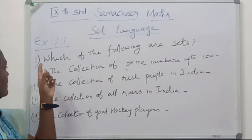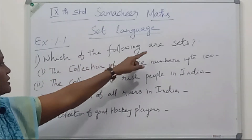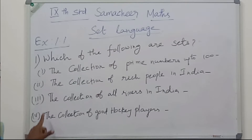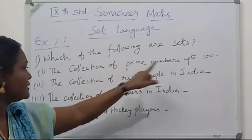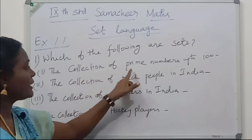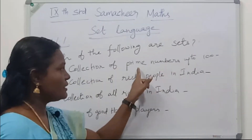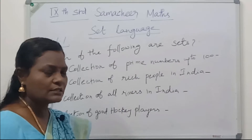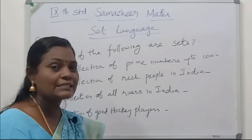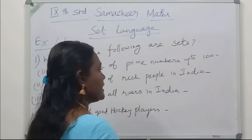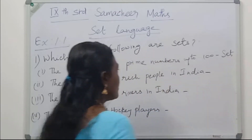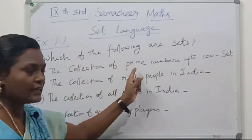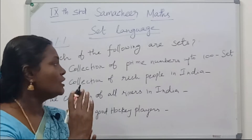See the 1st question: which of the following are sets? They have given 4 questions. The 1st one: collection of prime numbers up to 100. We have to write the prime numbers up to 100 only, so it is defined well. We can say it is a set, because we can have only the prime numbers up to 100 inside it.